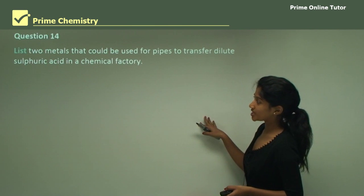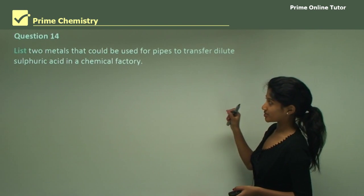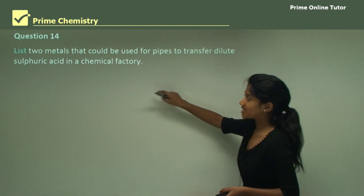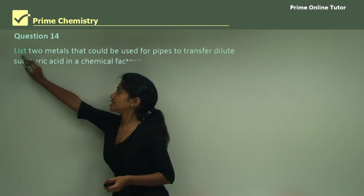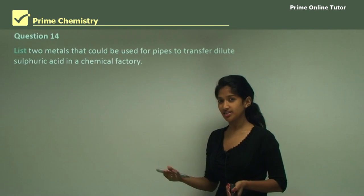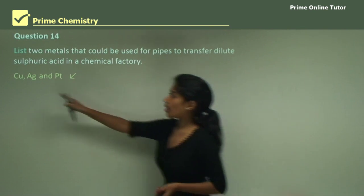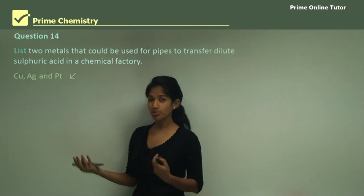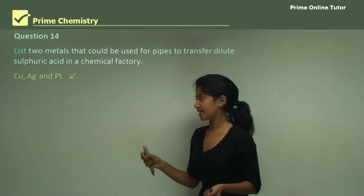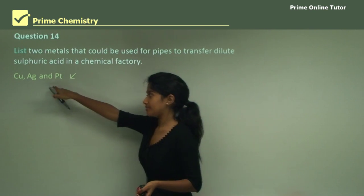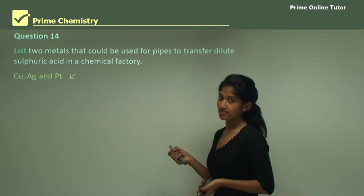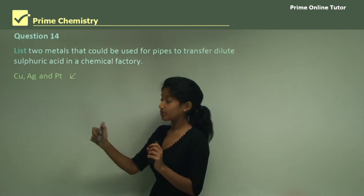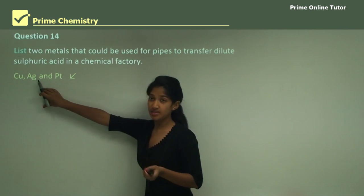Question 14: List two metals that could be used for pipes to transfer dilute sulfuric acid in a chemical factory. Note the word 'list' — when listing you just name or identify it. We have copper, silver, and platinum. You can write them as their names: copper, silver, and platinum. If it says 'name,' you should always write the full name.